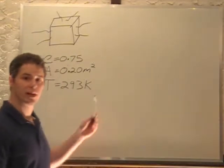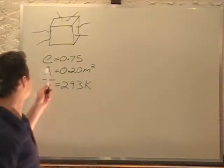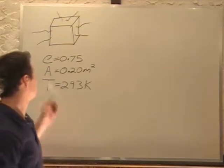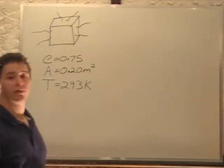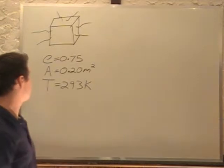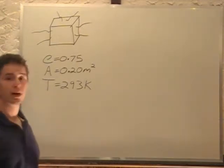In this problem we have an object that has an emissivity of 0.75 and an area of 0.20 meters squared, and a room temperature of 293 Kelvin.